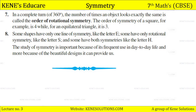In a complete turn of 360 degrees, the number of times an object looks exactly the same is called the order of rotational symmetry. For example, the order of symmetry of a square is 4, while for an equilateral triangle it is 3.